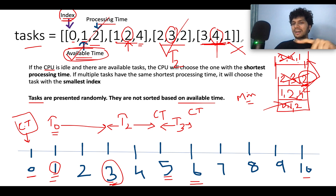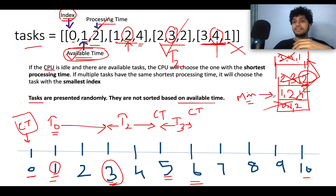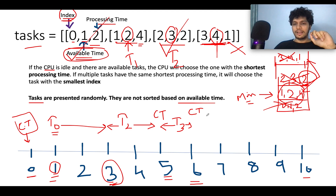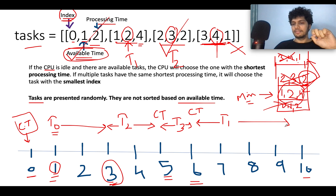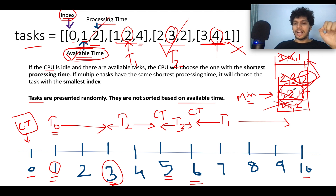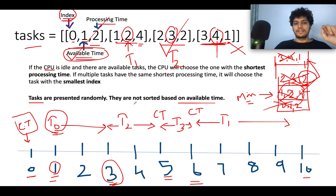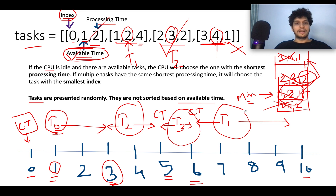At time six, there are no more pending tasks to insert. We ask the min heap if anything is pending — yes, task 1 remains. It is pulled out and executed for four units of time, spanning from time six to ten. We have now completed all tasks. The execution order derived is: task 0, task 2, task 3, task 1 — which matches our expected output.